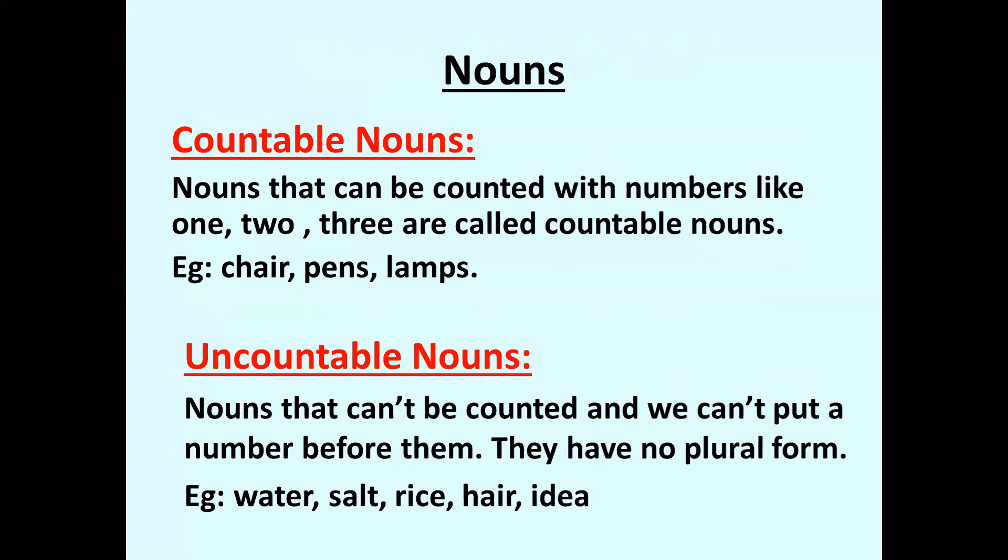Let us see the nouns. There are two types of nouns: countable and uncountable nouns. Countable nouns are nouns that can be counted with numbers like one, two, three. For example: chair, pens, lamps — we can count these.